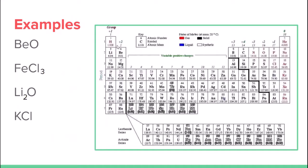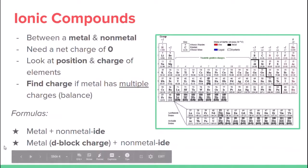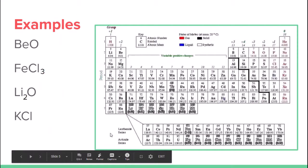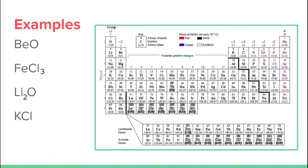Let's look at some examples. Beryllium and oxygen: beryllium has a charge of positive two and oxygen has a charge of negative two, so they already cancel each other out. Using our formula — metal plus non-metal with ending changed to -ide — it's going to be beryllium oxide.